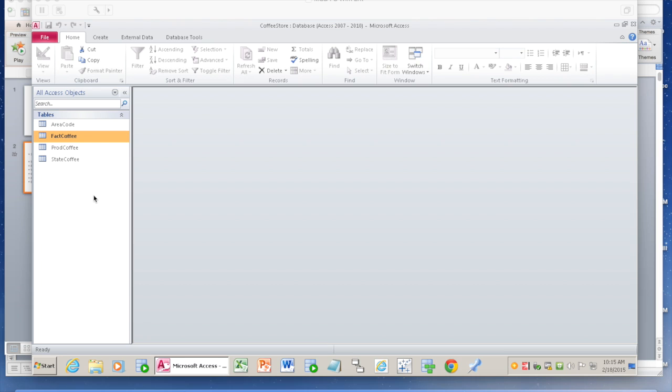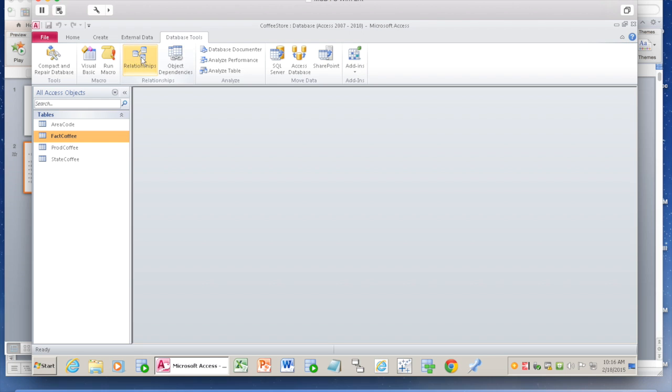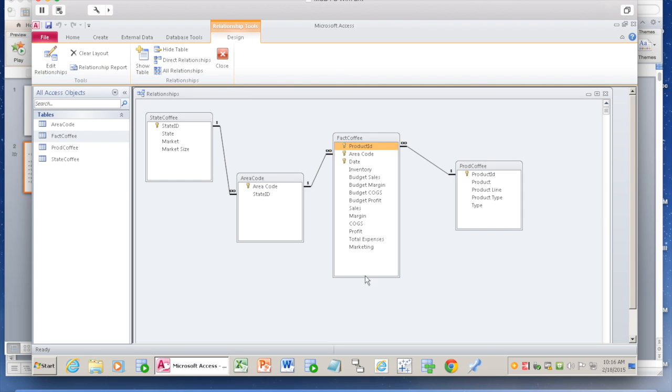To introduce you, we're going to use the coffee store database that we created in the previous video. Here is that coffee store. It has four tables. So you have the product information, product coffee. If you just go to the database tools and click on relationships, it gives you a snapshot of the various attributes in each table and how they are connected.